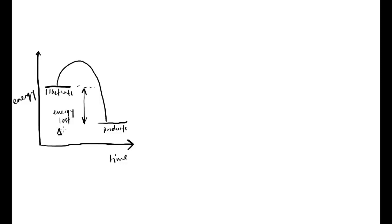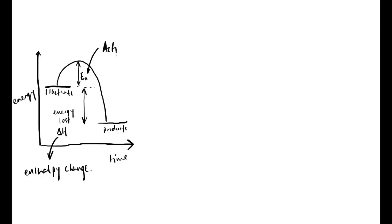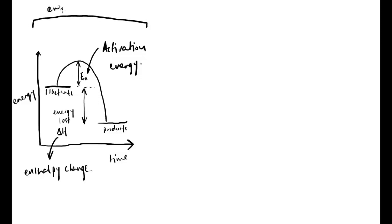That energy difference is something we call delta H — the enthalpy change — regardless of whether energy is lost or taken in. This other part here, this hump, is actually the activation energy, which I'll call Ea. From rates of reaction, remember that activation energy is the energy required for a reaction to actually begin. So if two particles collide and do not have the required activation energy, the reaction will not go ahead.